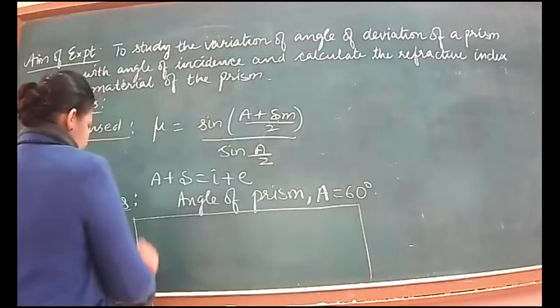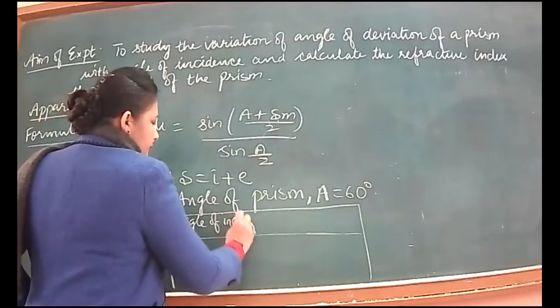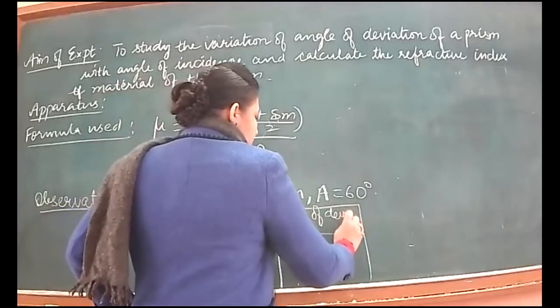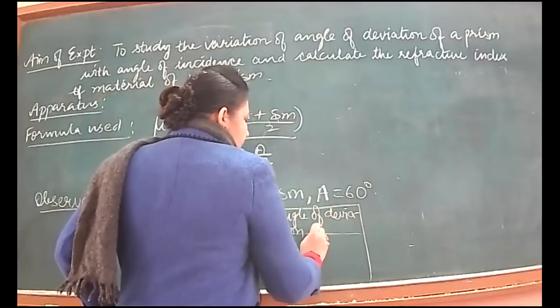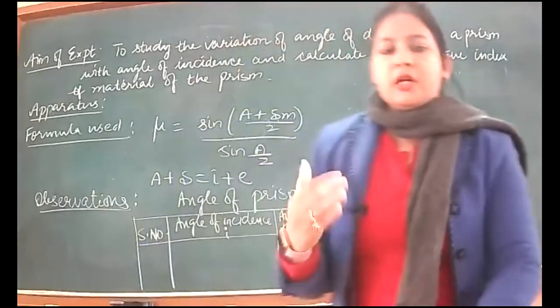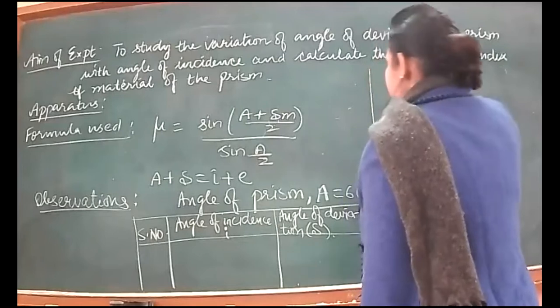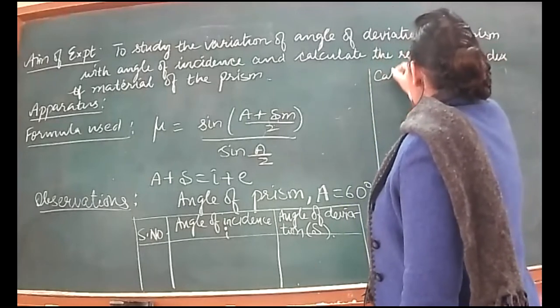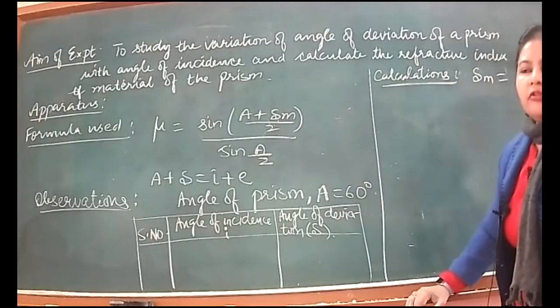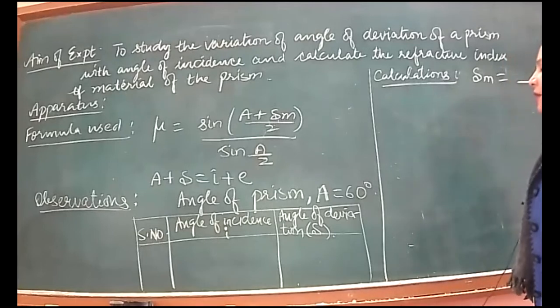For observations, we will make a table between angle of incidence I and angle of deviation delta. We'll note delta m, the angle of minimum deviation, which I'll tell you how to calculate from the graph, from the readings, and from the ray diagram.